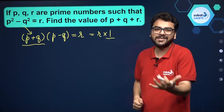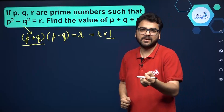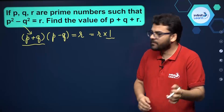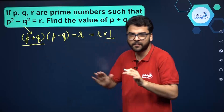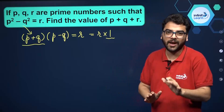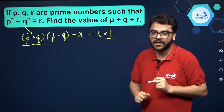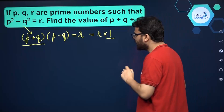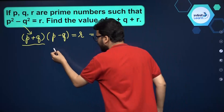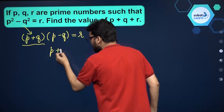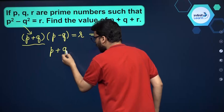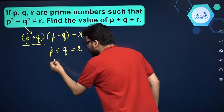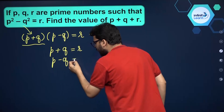The smallest prime number is 2, and 2 plus 2 is 4. So the minimum value of p plus q, if p and q are prime numbers, will be 4 — it can never be equal to 1. So the only possibility we are left with is p plus q is equal to r, and p minus q is equal to 1.